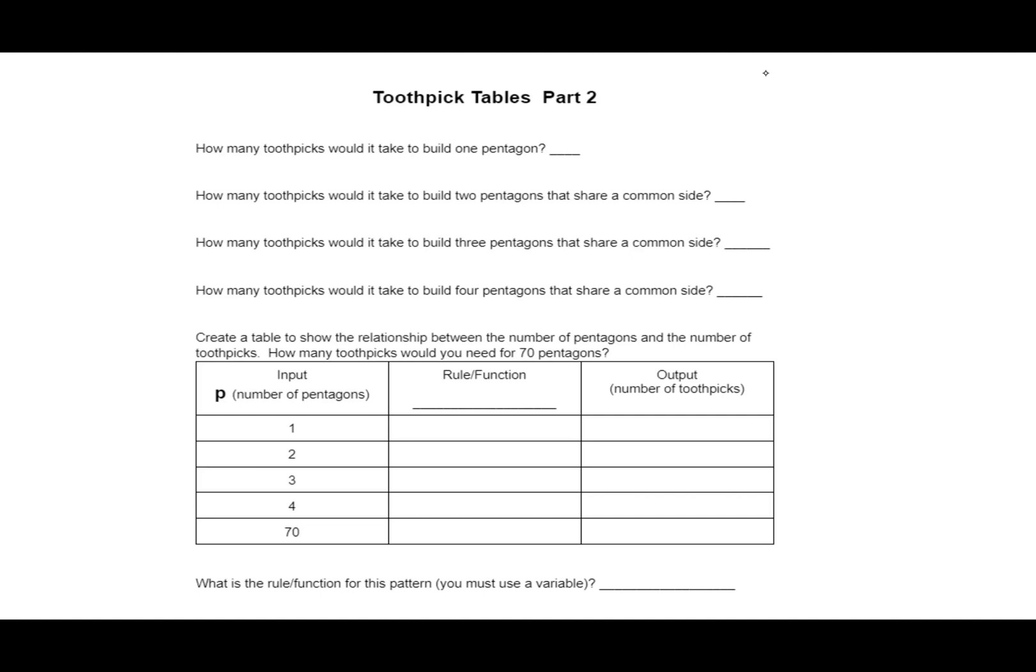Here's the table that goes along with it. How many toothpicks would it take to build one pentagon? Well, we figured that out already. It took five toothpicks to build one pentagon. And to build two pentagons, if they share a common side, we only had to put four more on that one. And then three pentagons, you'd only need four more, because they're sharing that side. So you're only adding four toothpicks to it. And then to build a fourth pentagon, we'd need 17.